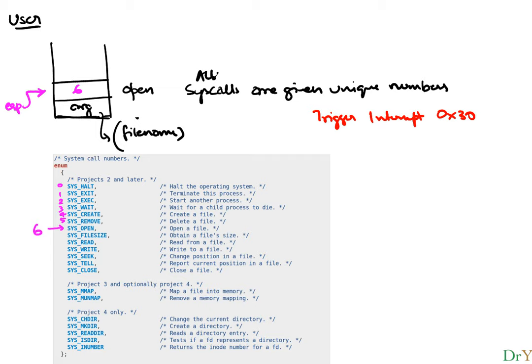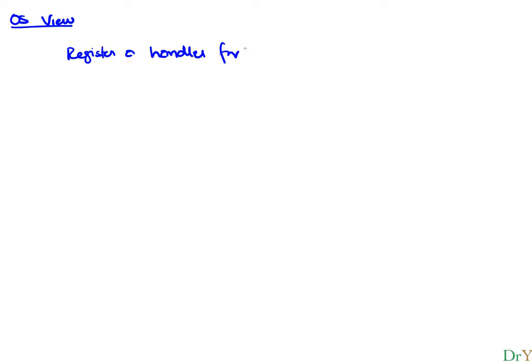All the hardware does is check whether there is a corresponding handler registered for this interrupt. That means the responsibility of the OS is to register a handler for interrupt 0x30, and this should be done at initialization — the best place is in syscall.c in the syscall_init function.